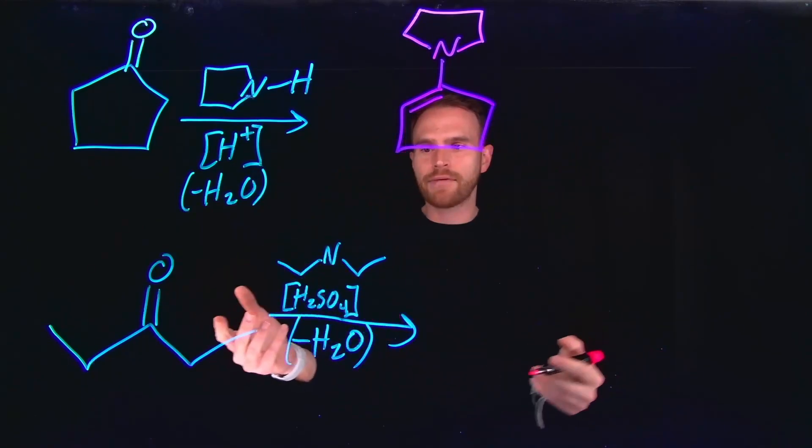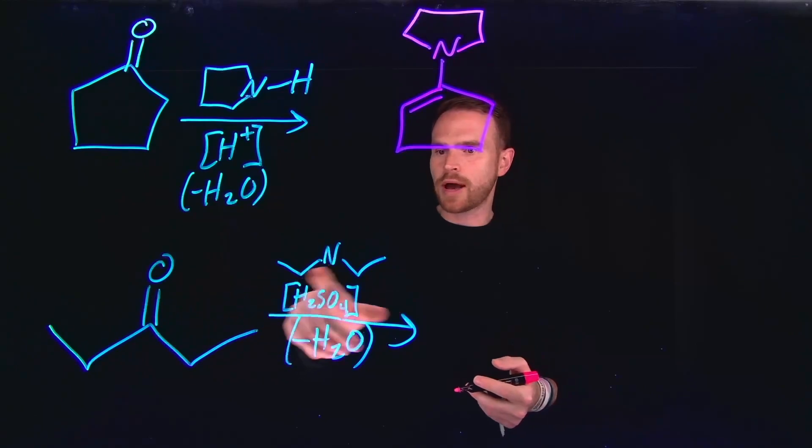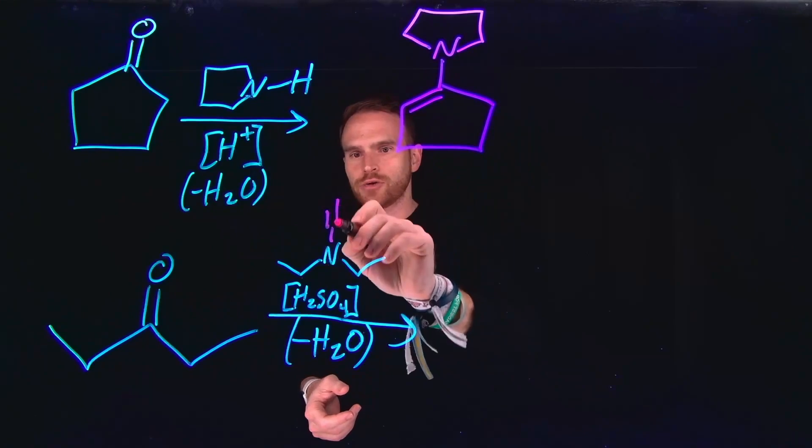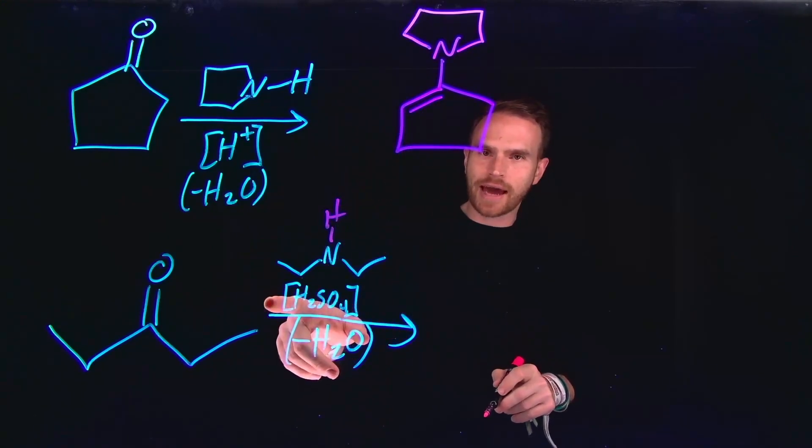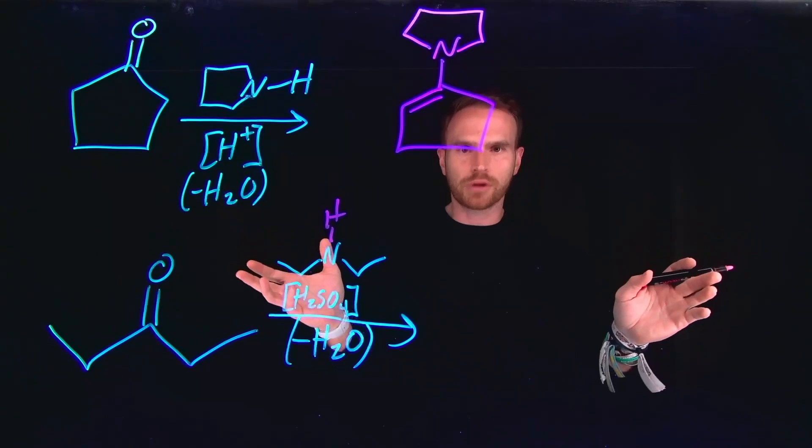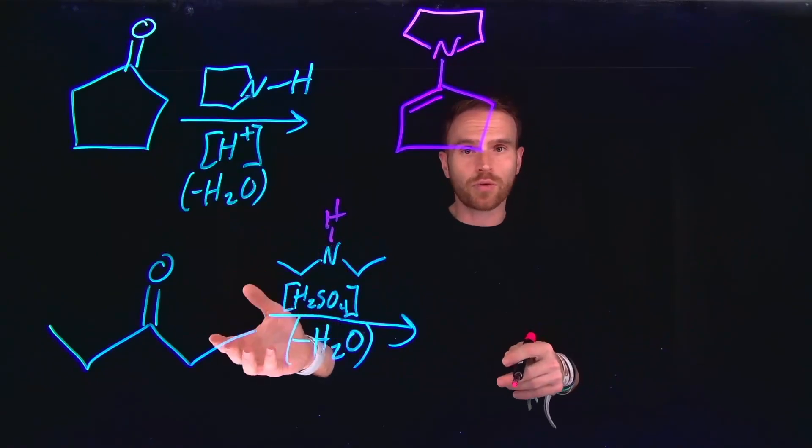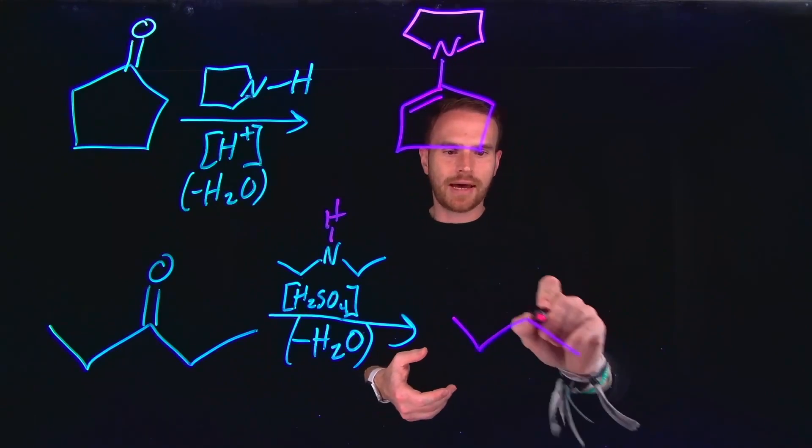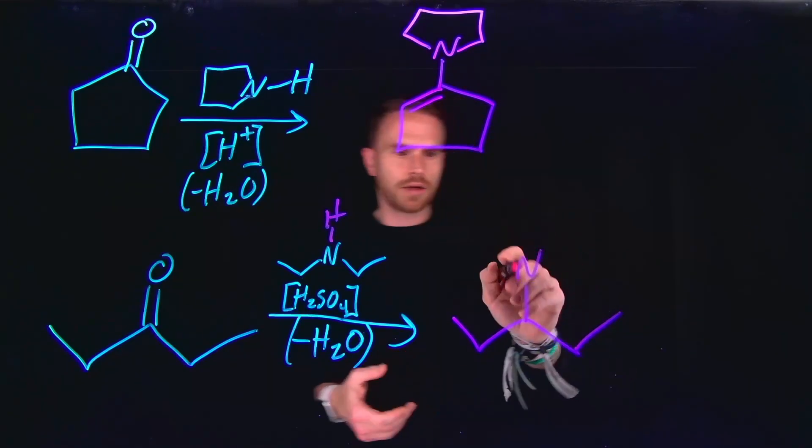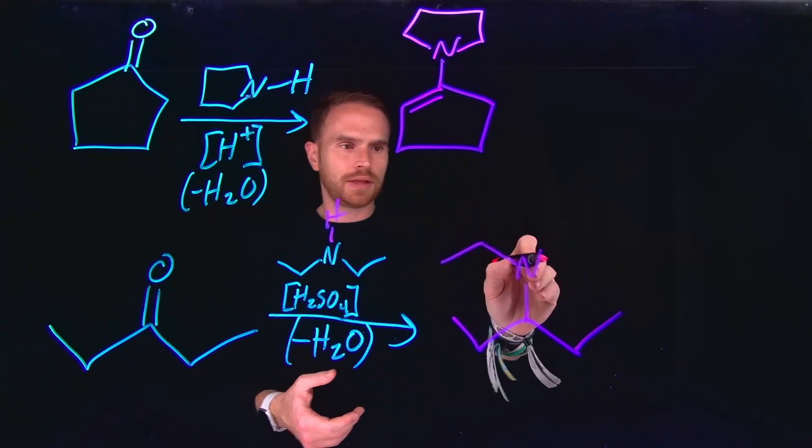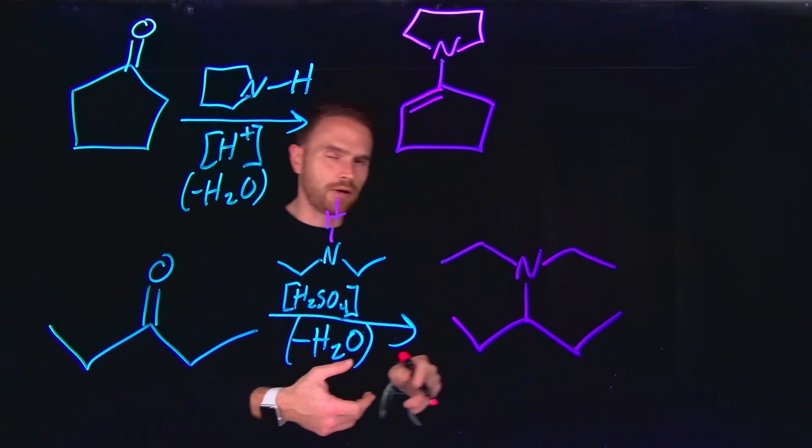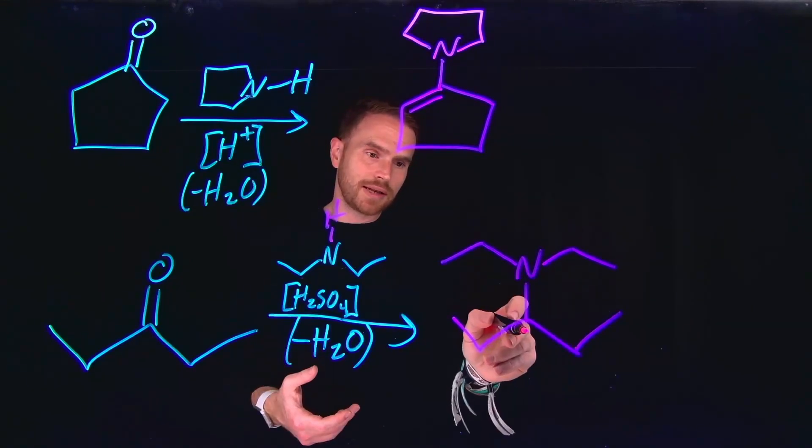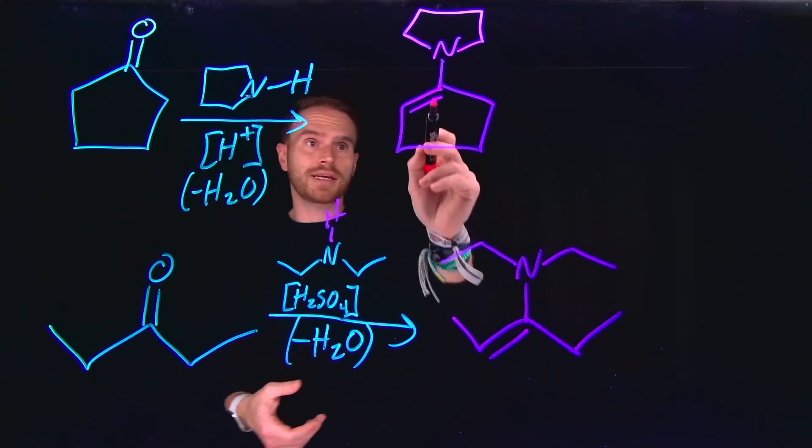For the second one, I have a very similar situation where I have a secondary amine, in this case, diethylamine. So there's also a hydrogen here. I have catalytic acid and I'm going to end up losing water in this process. So again, we're going to be forming an enamine. Now, what's different about this one though, is that we are still going to form our nitrogen here, and we are going to be left with a secondary compound up here. Now, notice that the carbon that is attached to that nitrogen is going to now have a double bond, just like it did in this one.